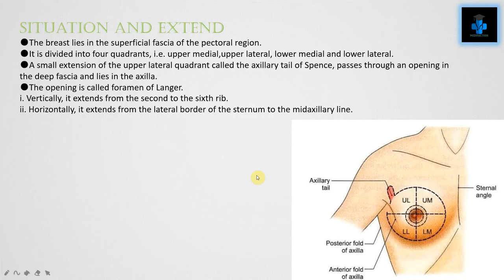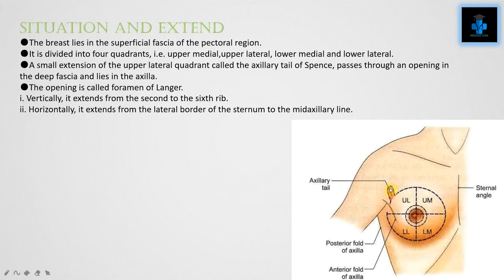Situation and extent. The breast lies in the superficial fascia of the pectoral region. It is divided into four quadrants: upper medial, upper lateral, lower medial, and lower lateral. A small extension of the upper lateral quadrant, called the axillary tail of Spence, passes through an opening in the deep fascia and lies in the axilla. This opening is called the foramen of Langer. Vertically it extends from the second to the sixth rib, and horizontally from the lateral border of the sternum to the mid-axillary line.